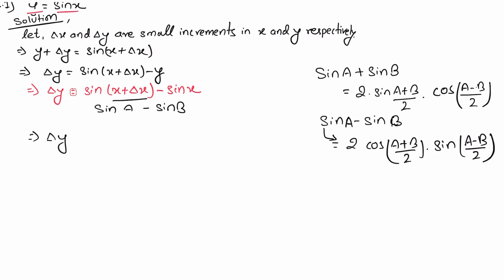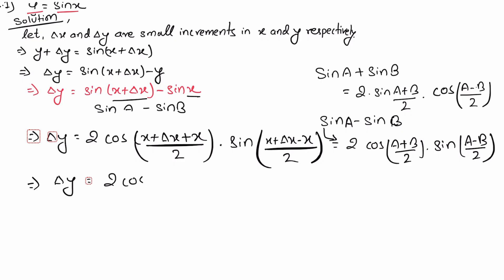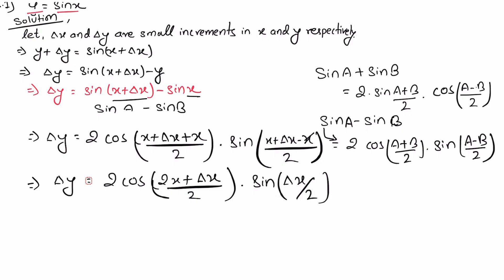Applying the formula, delta y equals 2 cos((x plus delta x plus x)/2) times sin((x plus delta x minus x)/2), which simplifies to delta y equals 2 cos((2x plus delta x)/2) times sin(delta x / 2), since the x terms cancel in the sine argument.